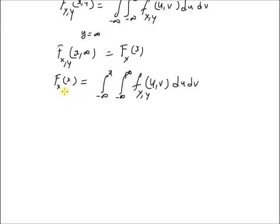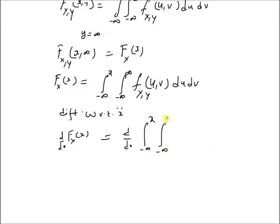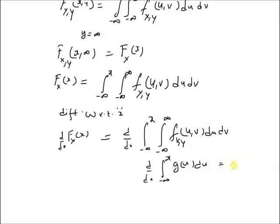Now, differentiating this expression with respect to x on both sides, we have d/dx of F_x(x) is equal to d/dx of the integral from minus infinity to x of the integral from minus infinity to plus infinity of f_{x,y}(u, v) du dv. By definition, the derivative d/dx of the integral from minus infinity to x of g(u) du is equal to g(x), where the derivative and integral operations cancel each other.